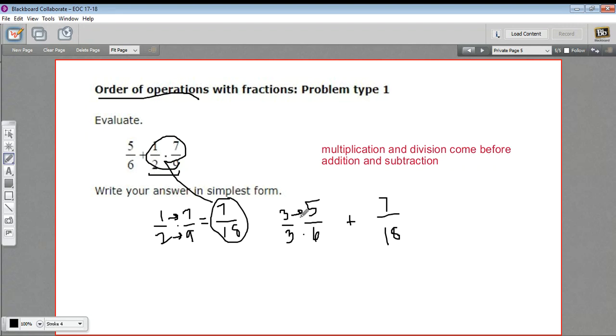So I could multiply this fraction by three over three to put it in eighteenths. So let's do that. Three times five is fifteen. Three times six is eighteen. Fifteen plus seven eighteenths. So I've got fifteen eighteenths plus seven eighteenths. Fifteen plus seven, I can just add them now since the denominators are the same.